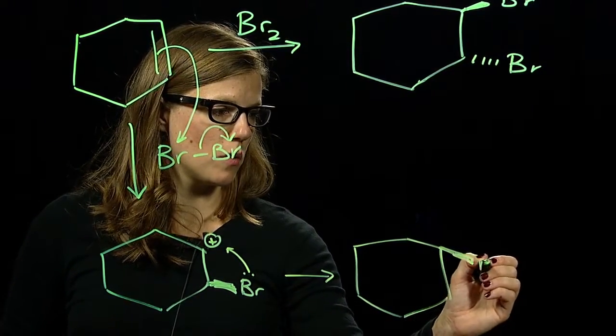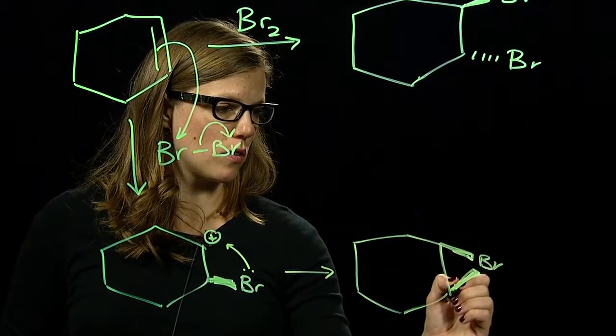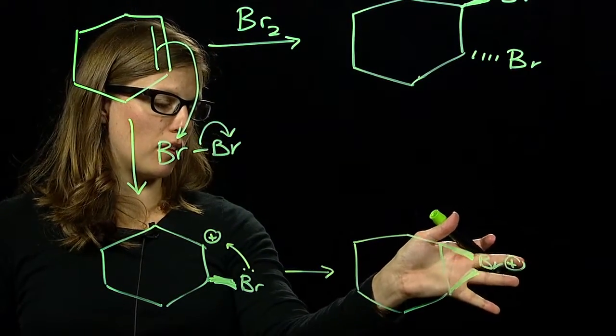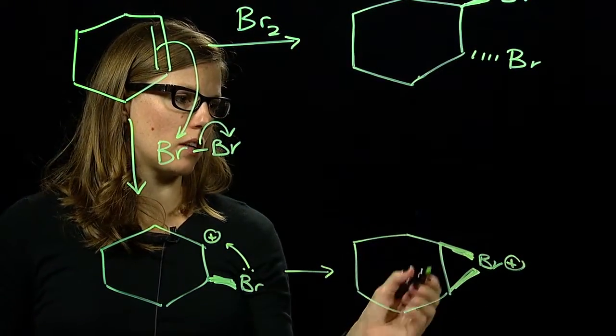And so in this case, you can only have the bromine cis within the three-membered ring. The bromine is basically blocking the face of the cyclohexene ring.